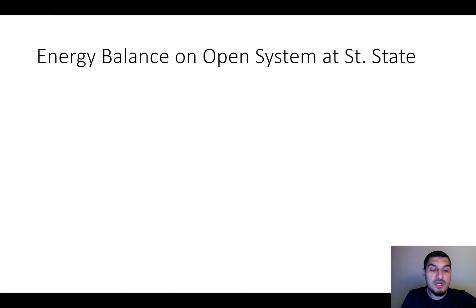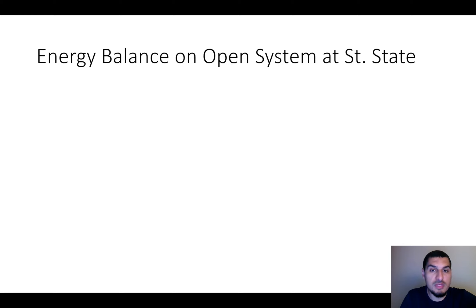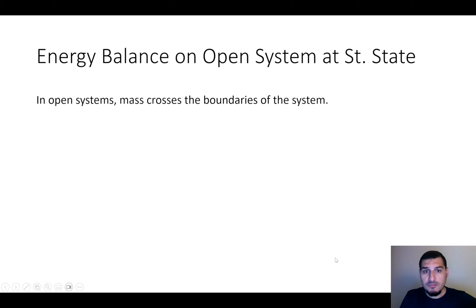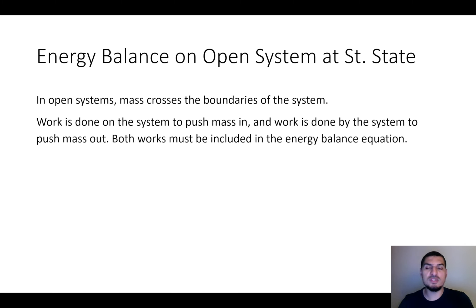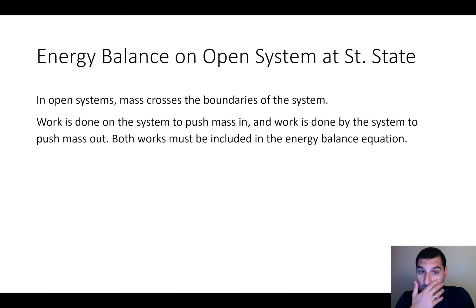There are a couple of things we need to discuss before we go ahead and talk about the derivation, because the derivation depends on these points. The first point is the work, because this work is going to be one of the main differences between open system and closed system. The open system is a system where there is a mass that crosses the boundaries of the system.